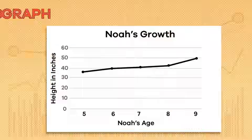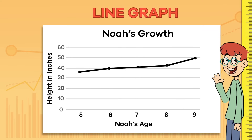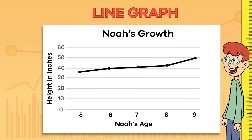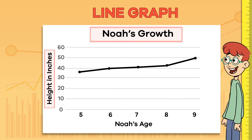Super job! Next, let's look at a line graph. These graphs are helpful when showing information over a period of time. This graph is measuring how tall Noah grew as he got older. On the left side of the graph are numbers that represent inches. Noah's age is listed across the bottom of the graph. The black line on the graph shows how tall he grew as he got older. Can you see how the line moves upward? As Noah gets older, he also grows taller.